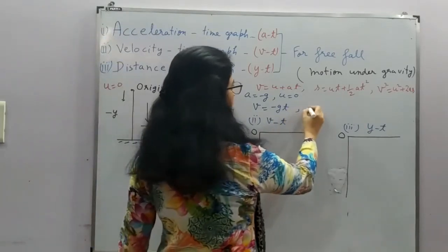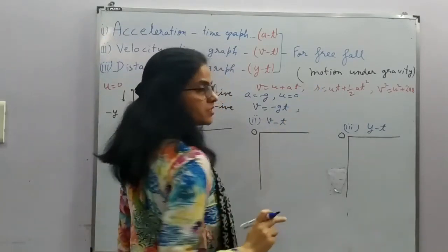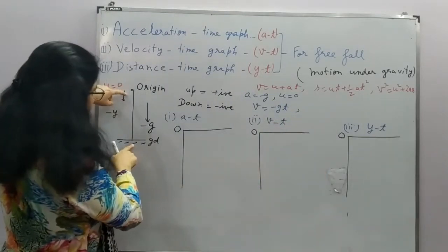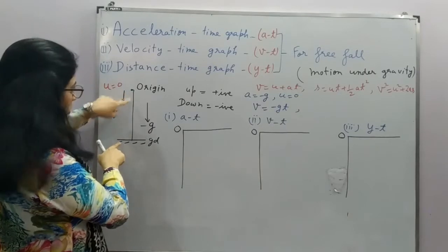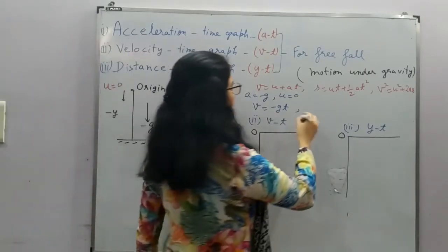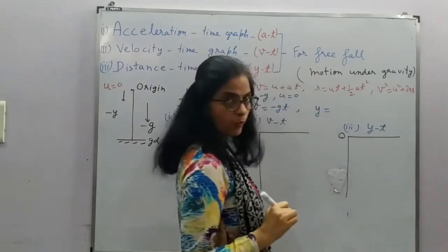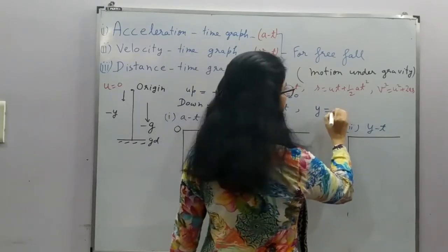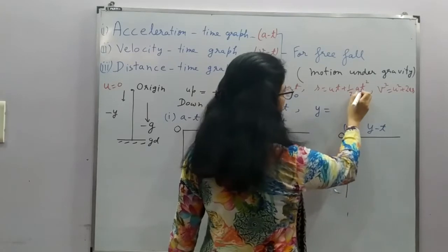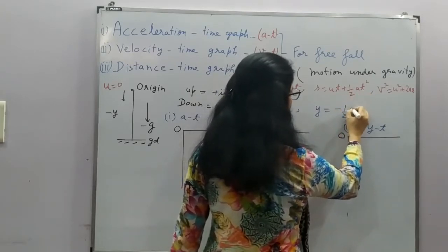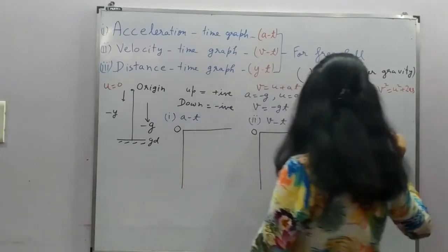Next equation, this is distance, so I can write distance is Y. I am not talking about the position. So we can say here that distance is Y, and U is 0, so this part is 0. G is minus g, A is minus g, so this I can write minus half gT square.